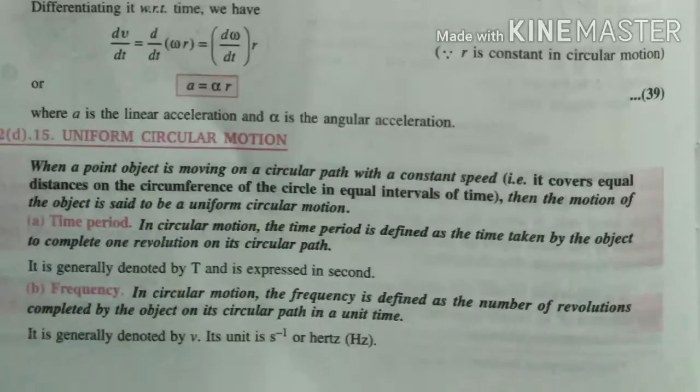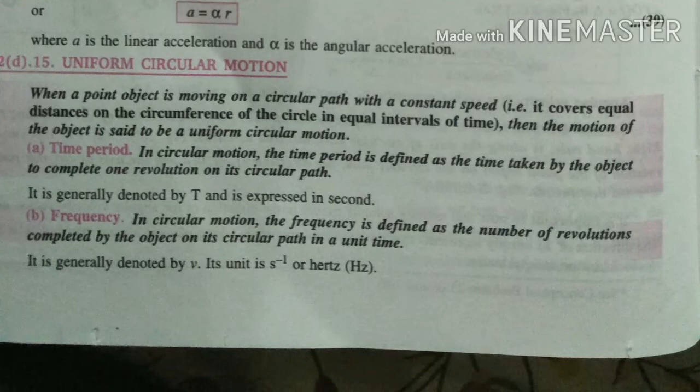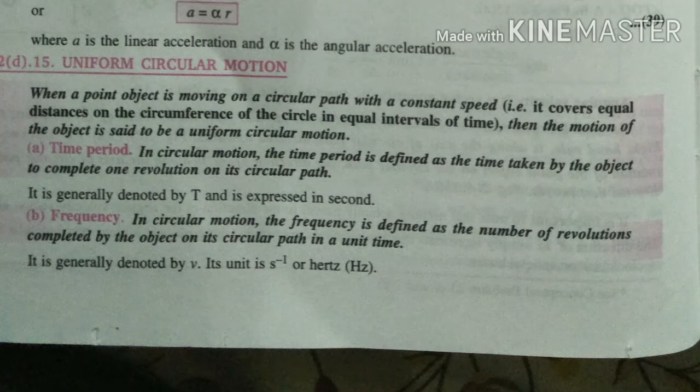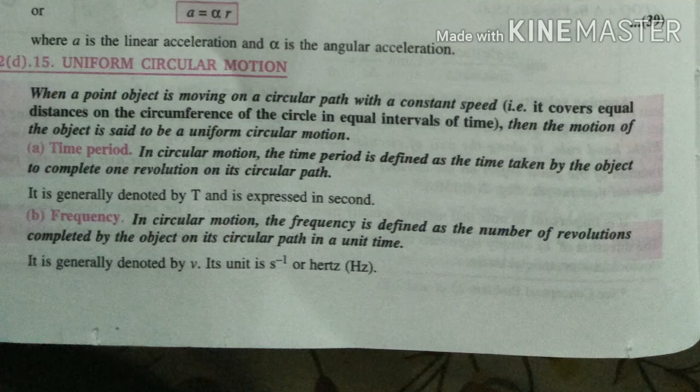So this way you calculate uniform circular motion. When a point object is moving in a circular path with constant speed, then the motion of the object is called uniform circular motion. Time period is the time to complete one revolution. Frequency is the number of revolutions per unit time, represented in hertz.